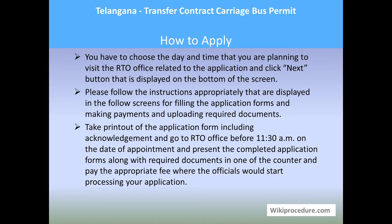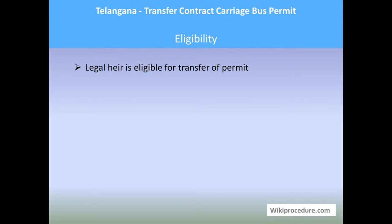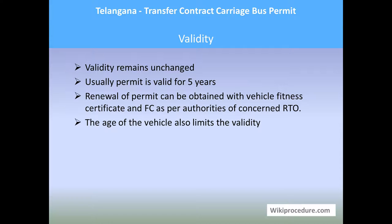Complete the online application by filling in the details and uploading the required documents. Once a satisfactory level is reached, you will get an acknowledgement with a set date to meet the RTO office officials. Please go to the RTO office before 11:30 AM on that date, submit the documents along with the acknowledgement, pay the fees at the right counter, and the authorities will start processing your application from there.